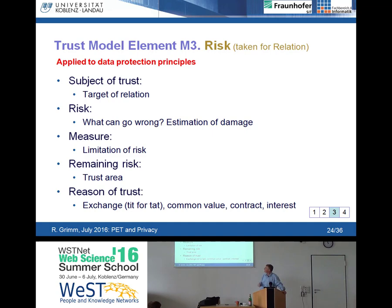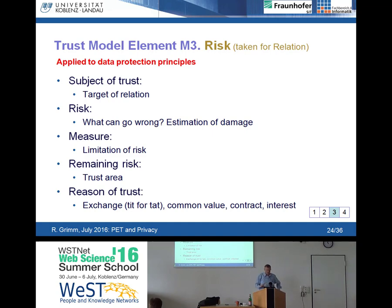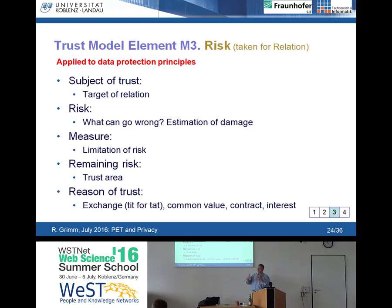Next step — if you have analyzed the risk, is there any measure which limits it? You must specify the measure. If you have the measure, there will be a remaining risk — it might be smaller, but still there. When you have put this picture together, you should understand what is the basis of trust that you are able to go into this risky relationship. This might be an exchange of resources — I give you something, I get something back; if you do something against my trust, I get a compensation. There could be a common value, like a cultural value, a legal agreement, or a contract.